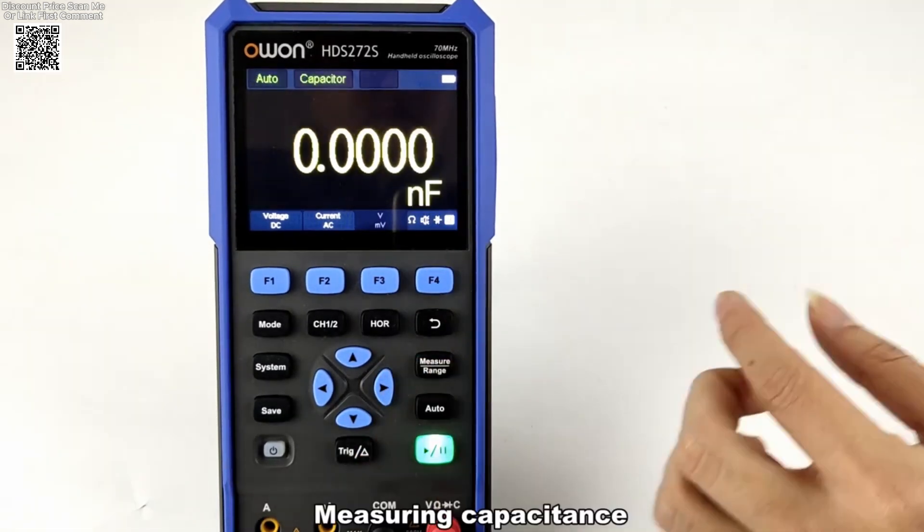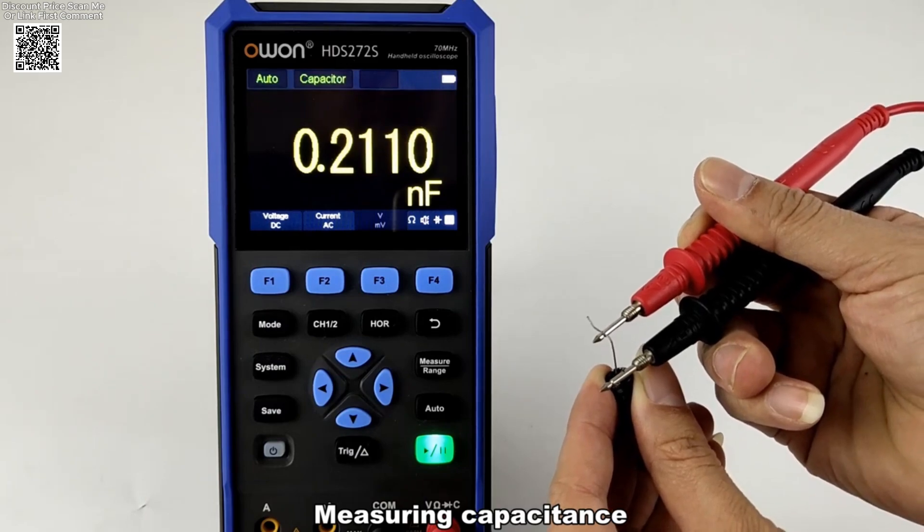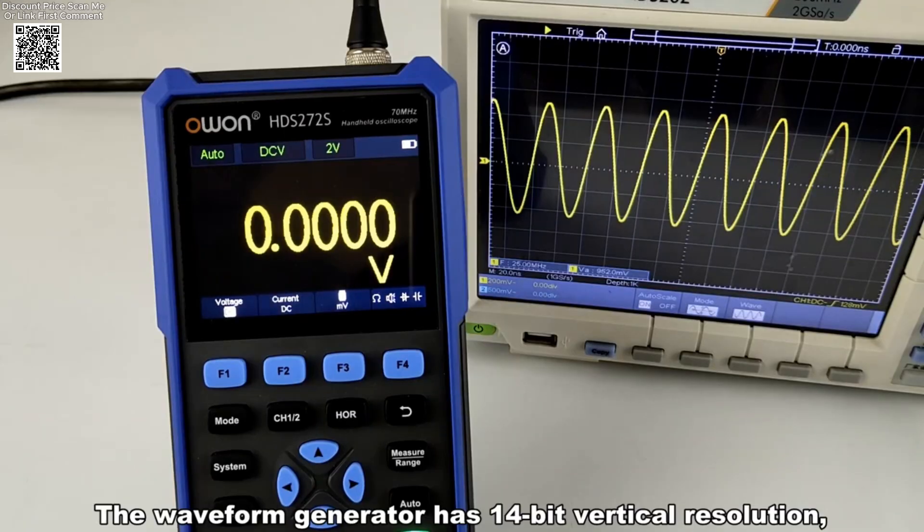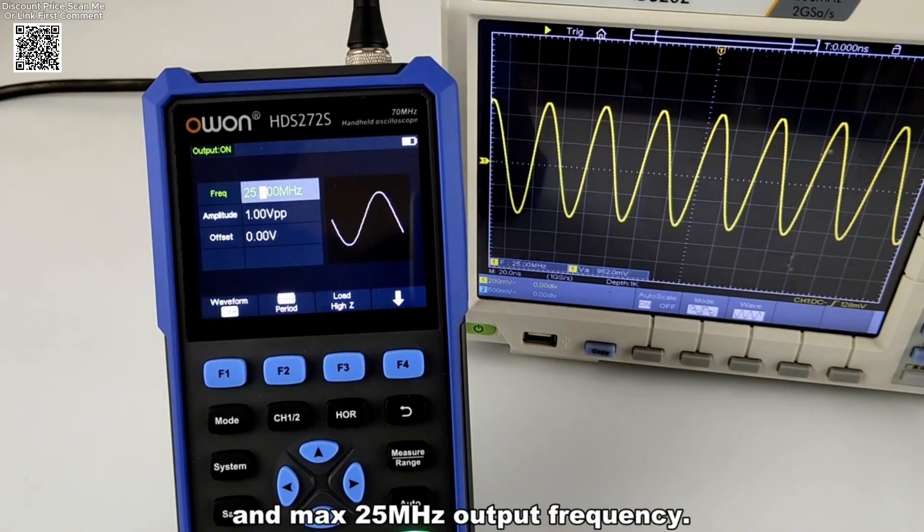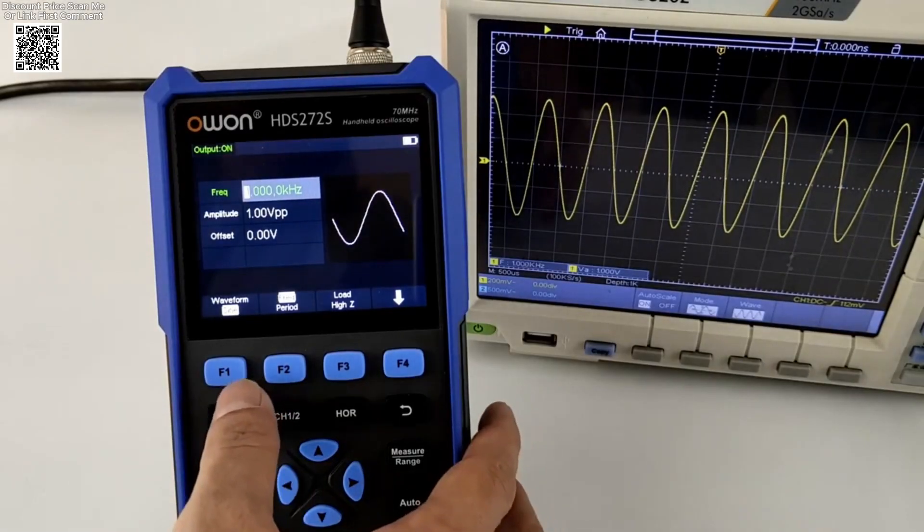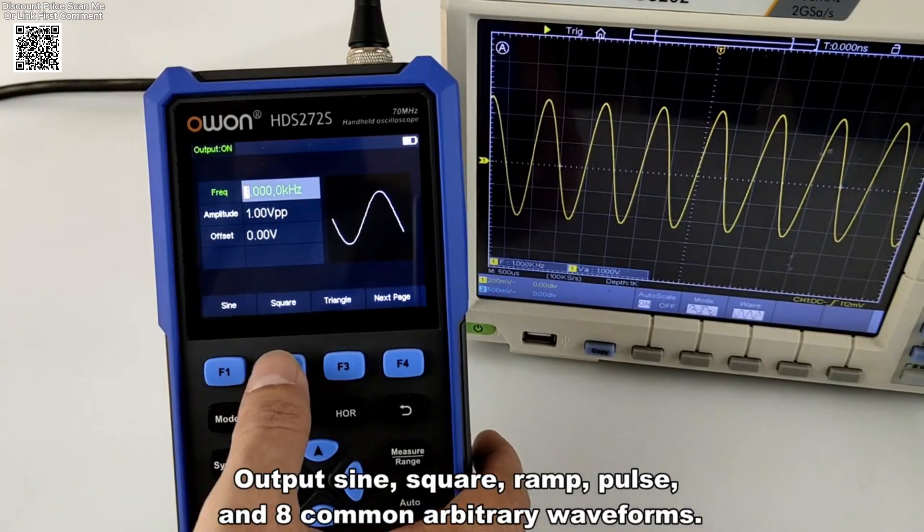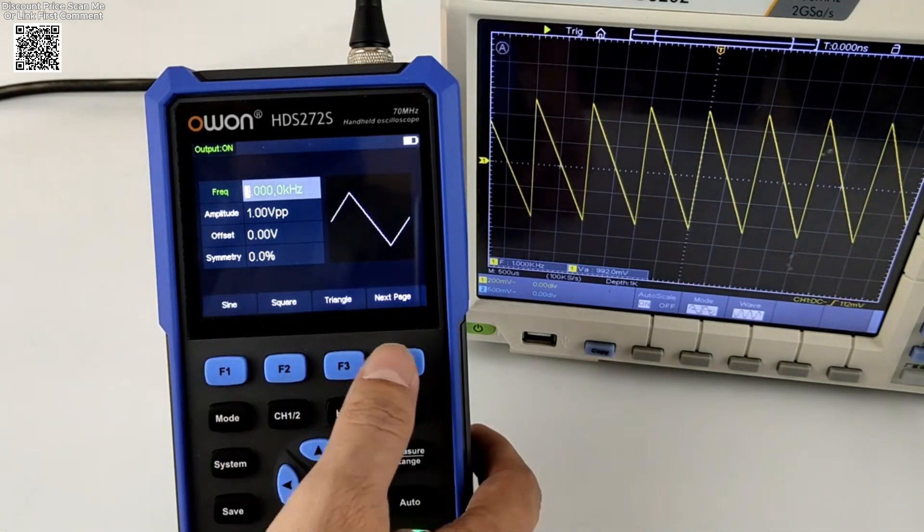The Type-C USB interface supports charging via a power bank, ensuring you're never caught without power when you're in the middle of critical tasks. With a total power consumption of less than 3 watts, it's both efficient and eco-conscious.